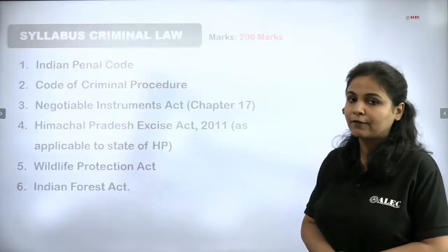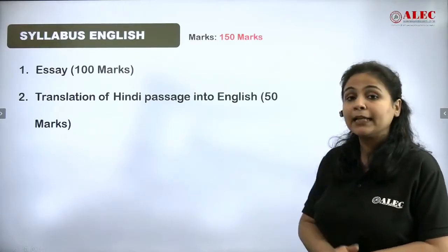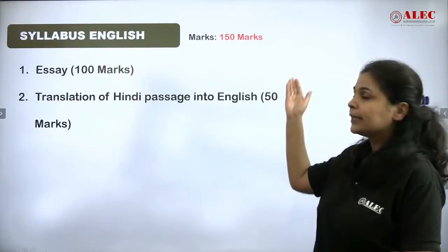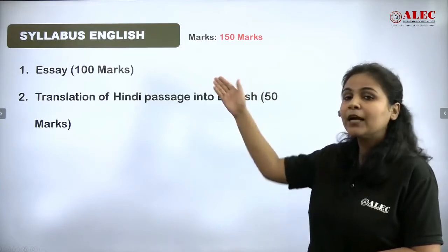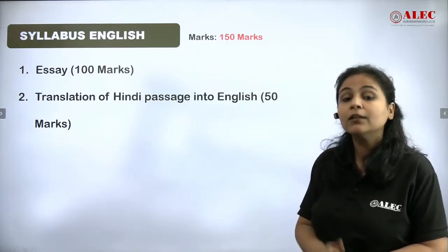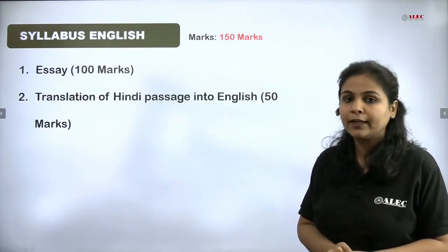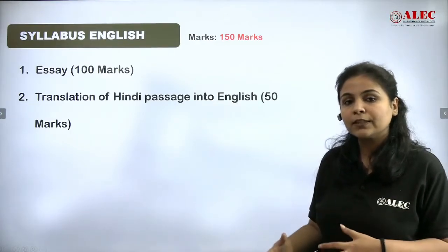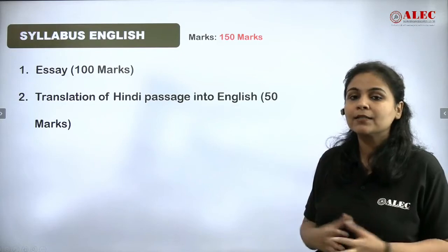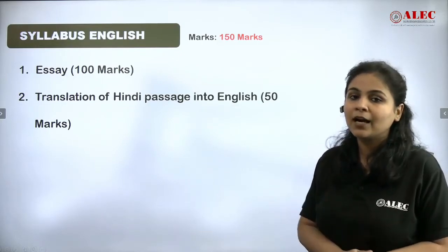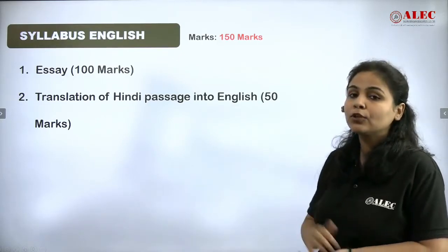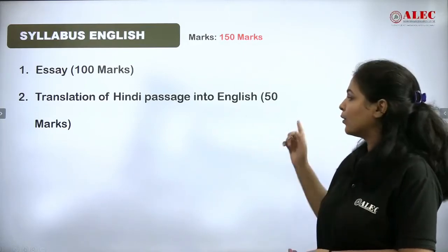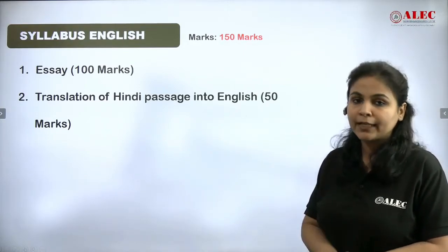Now let's go to the language papers. The first language paper is English Language, which is the fourth paper overall. It is 150 marks. There will be an essay worth 100 marks; you will be given a topic and the approximate word limit will be 800 to 1000 words, though you can write plus or minus — no hard and fast rule. Then you have to translate a Hindi passage into English, which will be 50 marks.